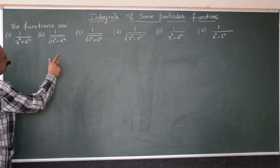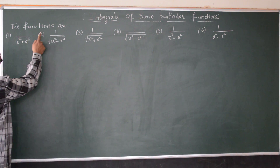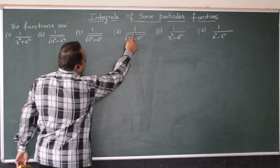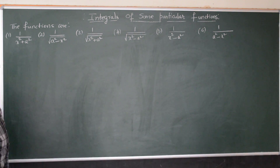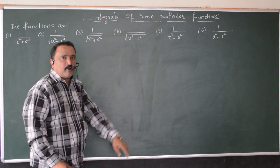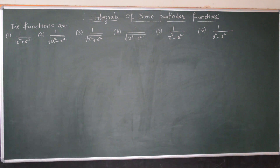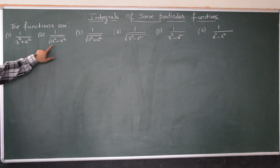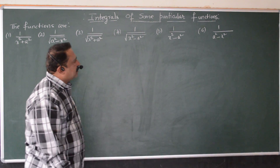Let's observe the nature and characteristics of each function. You can observe that the numerator of all these functions is one, and each function is in the form of a fraction — it has a numerator as well as a denominator. Since the numerator is one in all functions, the numerator will not actually bother us. But the denominators are to be remembered.